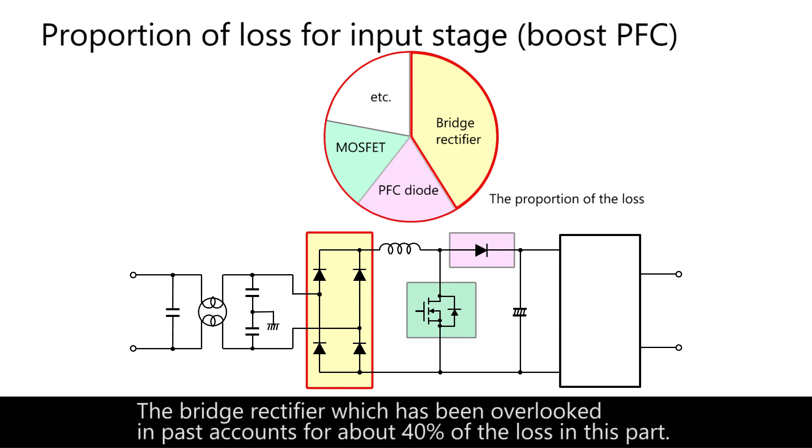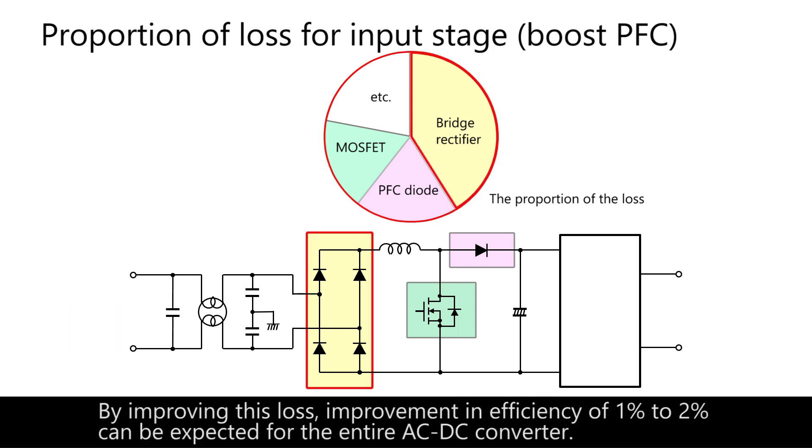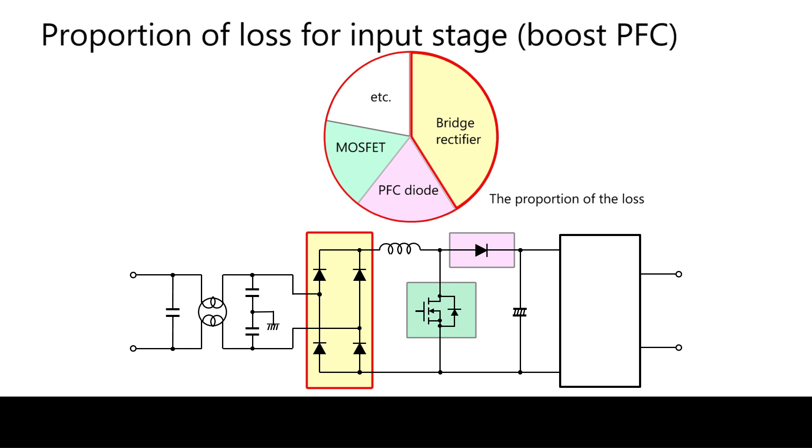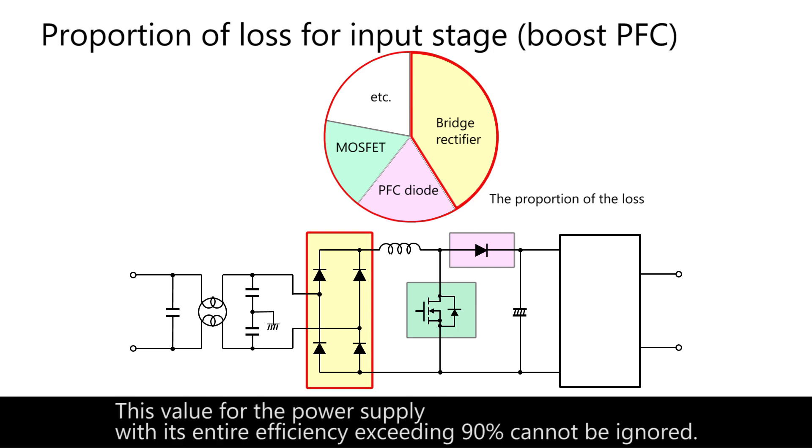The bridge rectifier, which has been overlooked in the past, accounts for about 40% of the loss in this part. By improving this loss, improvement in efficiency of 1% to 2% can be expected for the entire AC-DC converter. This value, for the power supply with its entire efficiency exceeding 90%, cannot be ignored.